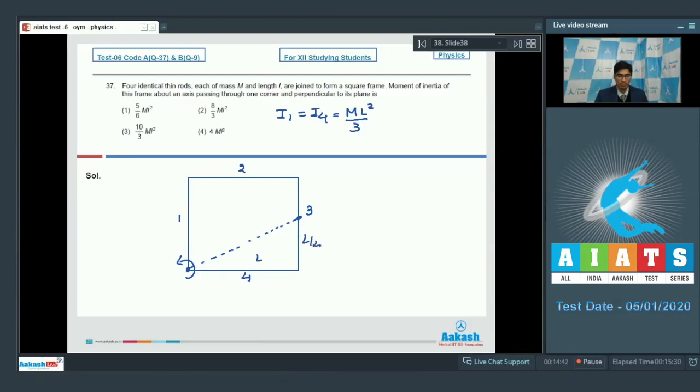Now dear students, if this length is L, this is L by 2. From Pythagoras theorem, we can write down that this length is L square plus L square by 4, which will be equal to root 5 L by 2, let this be d.